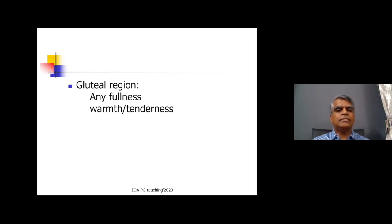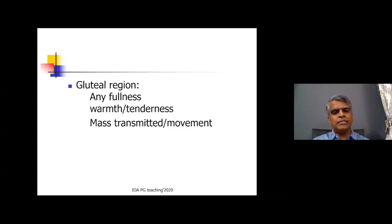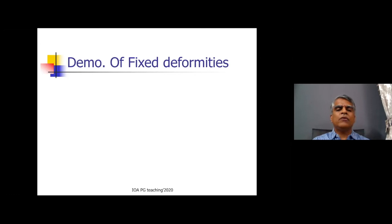Turn the patient and assess the gluteal region for fullness, warmth, tenderness, and any mass. A mass could be myositis ossificans or the head of femur - if it is smooth, rounded, and moves with movement of the femur, it is the femoral head. If it is just a mass, it may be myositis ossificans, as gluteal myositis is next most common after elbow and knee. Also palpate the other bony prominences - the ileum, pubis, and ischial tuberosity.